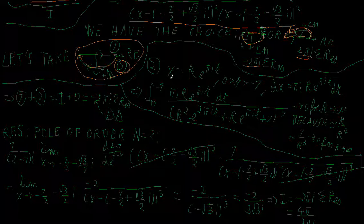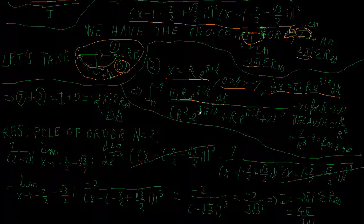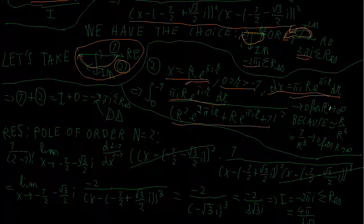We set x = r·e^(πit), where t is between 0 and −1, and dx = πi·r·e^(πit) dt. So we can rewrite everything in terms of t: the integral from 0 to −1 of πi·r·e^(πit) dt, with the denominator (r²·e^(πit) + r·e^(πit) + 1) squared — replacing x with r·e^(πit) and dx accordingly.